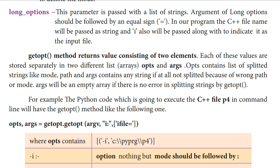Args contains any string if at all not splitted, because of a wrong path or mode. Sometimes the path is wrong or the mode is wrong — those values are stored in args list. Suppose there is no error, everything is correct, then the args list will be empty. Because args will be an empty array if there is no error in splitting strings by the getopt method.